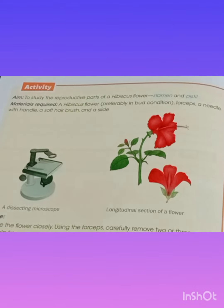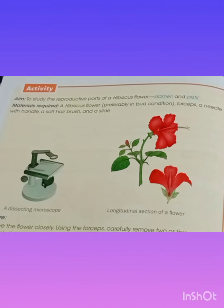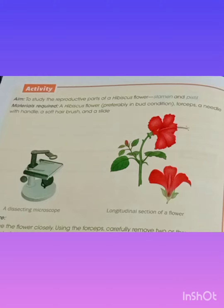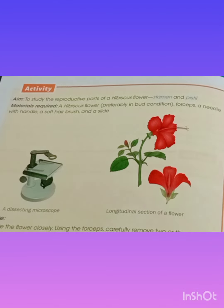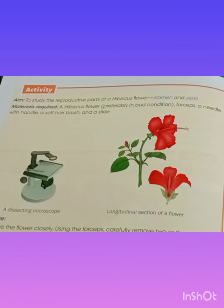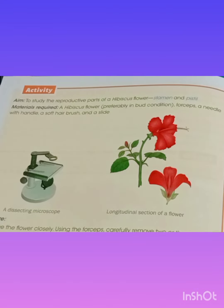Hello to all ICC Wood Class 5 students. Today's subject is biology, and today I'm going to discuss some basic questions. The first question is: which part of the flower is most important for sexual reproduction? The answer is androecium and gynoecium.